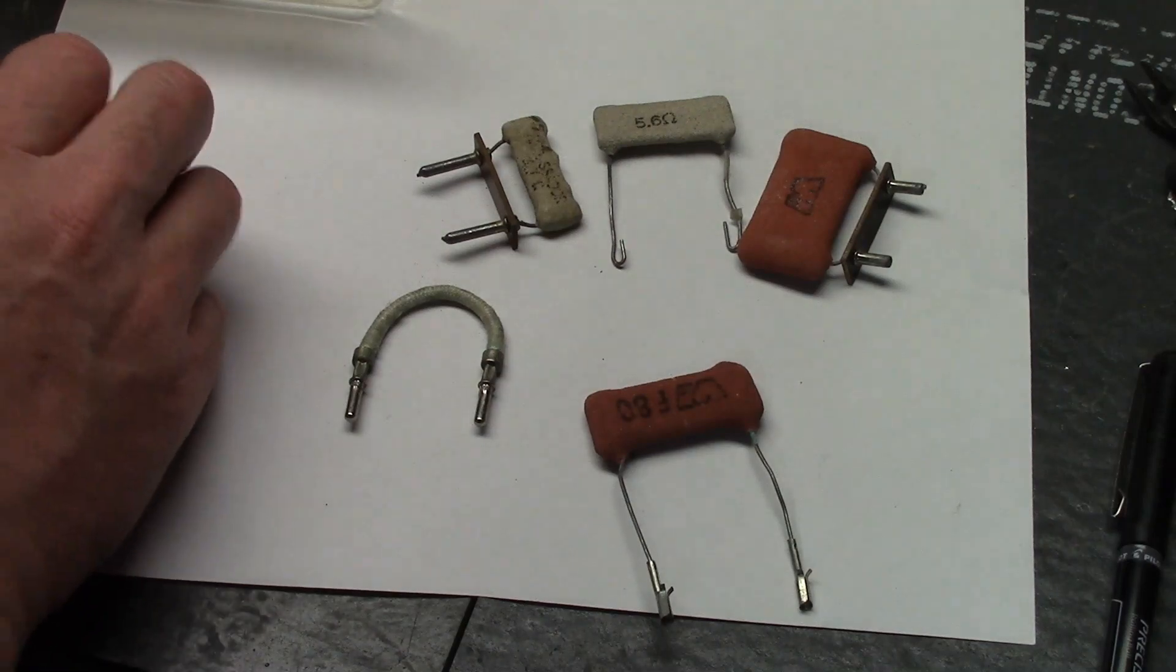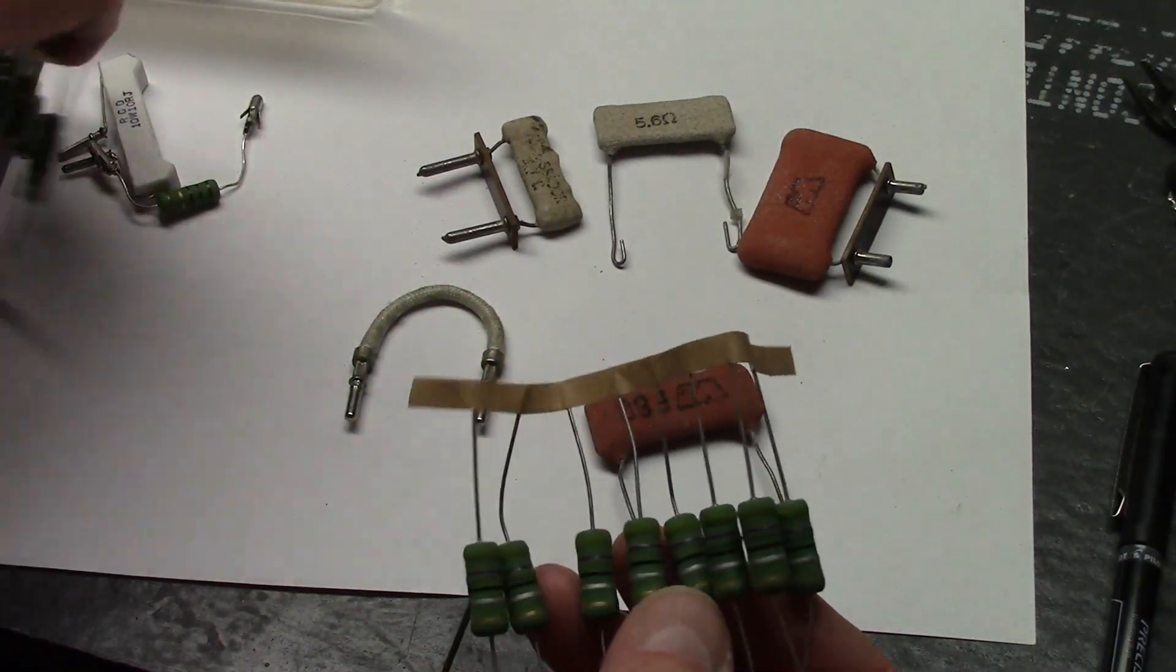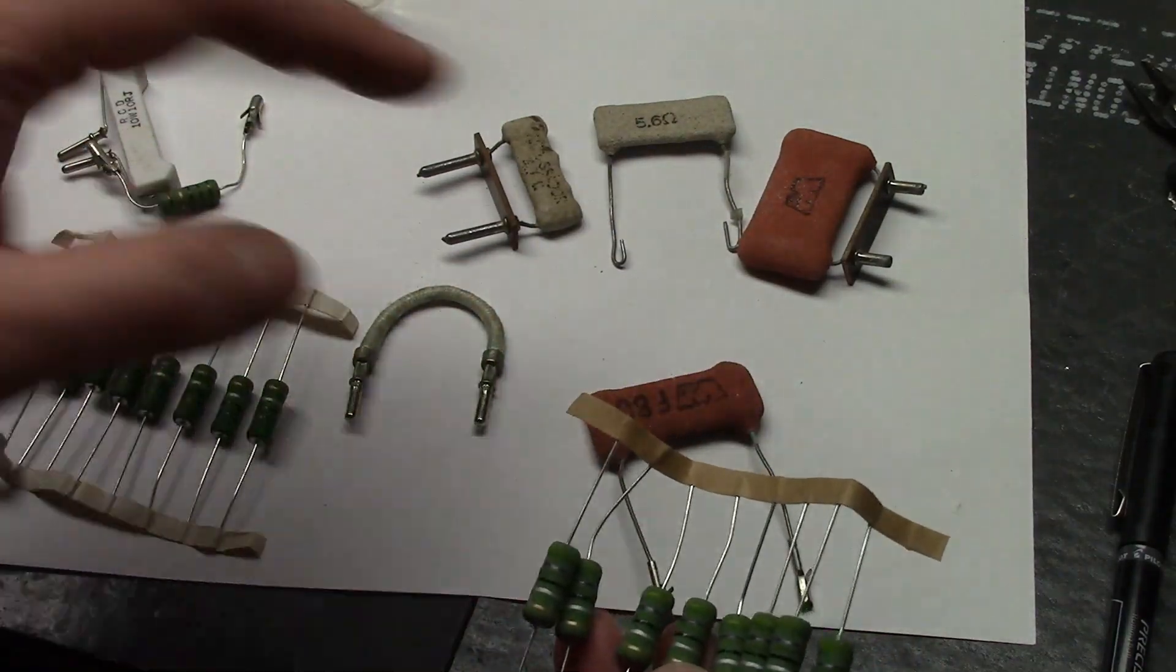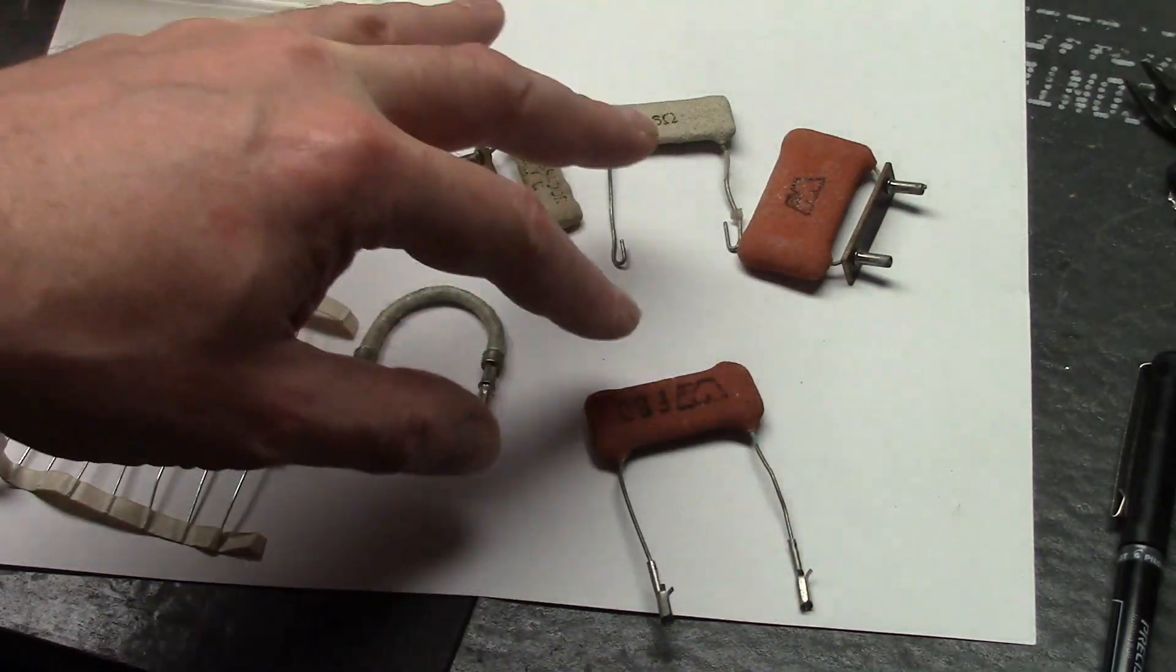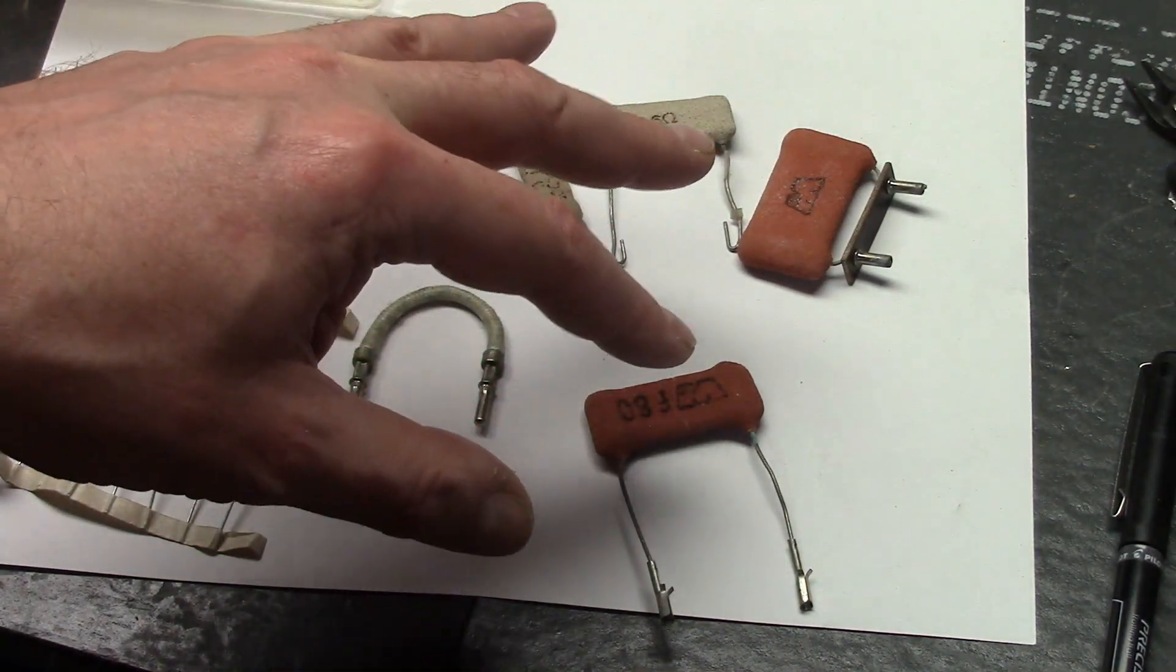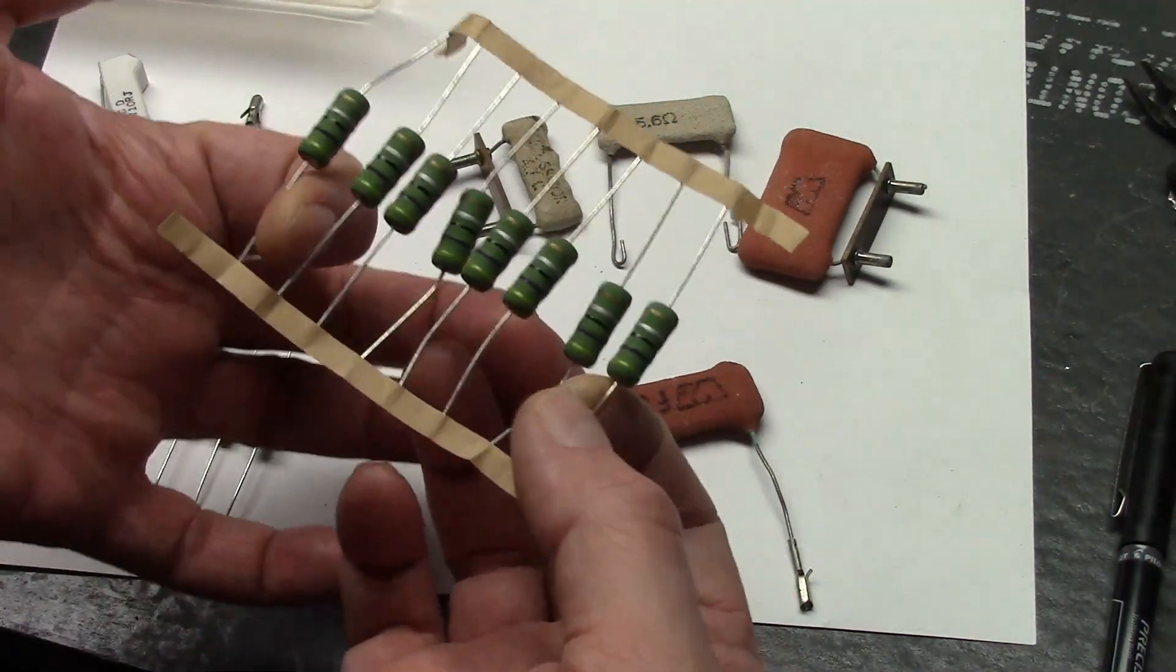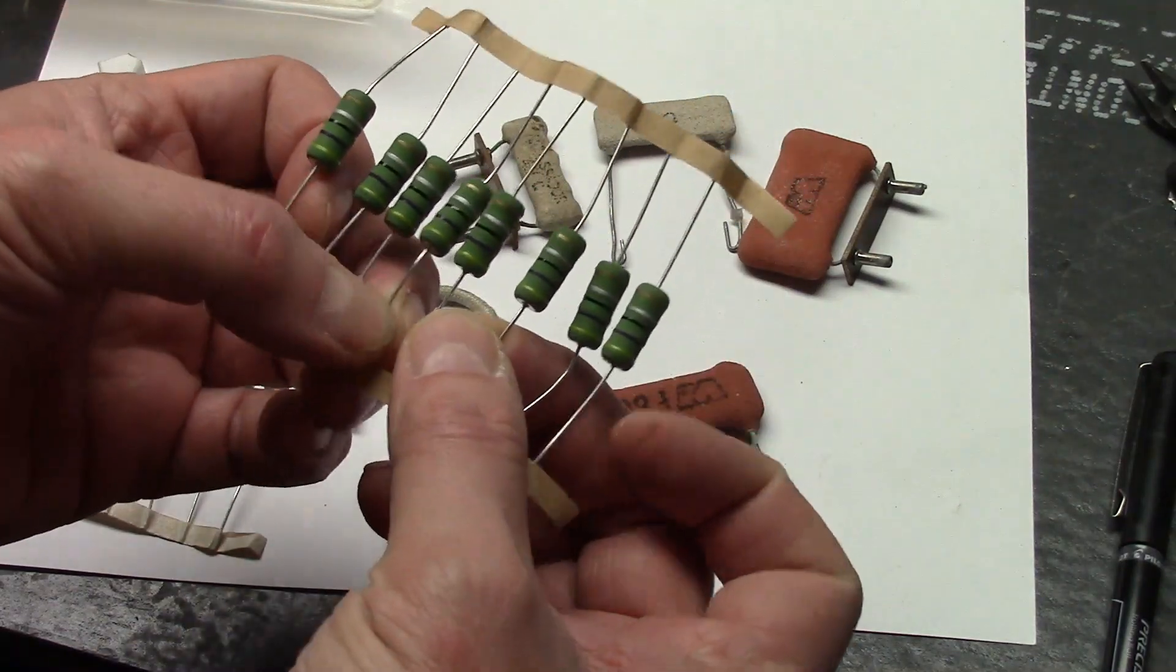What can you replace them with? Well, they do still make fusible resistors, but you'll have trouble matching the resistance and wattage ratings of these. I've never seen published specs, but they seem to be around 7 or 10 watt. Whereas the modern ones, the best I can find are 5 watt. They do make 7, but nobody seems to carry them.